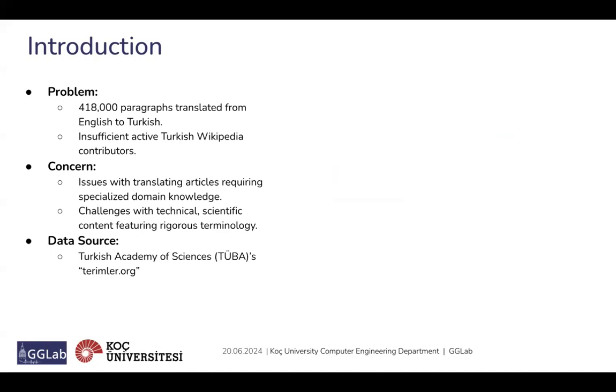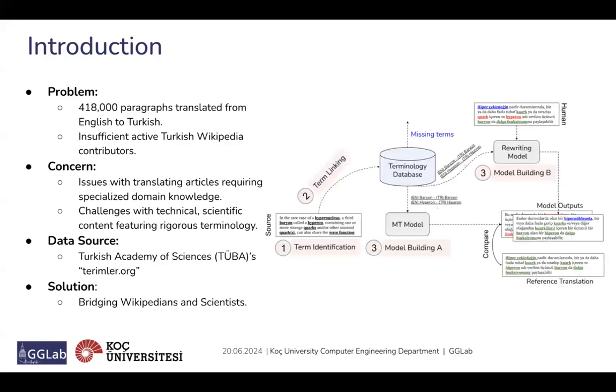Our proposed solution is to bridge the gap between Wikipedians and scientists. By connecting these two communities, we aim to improve the accuracy and quality of translations for technical and scientific content on Turkish Wikipedia. To achieve this, we aim to create a pipeline system that automatically identifies scientific and technical terms, consults an expert dictionary for accurate translations, and finally suggests automated terminology-aware translation.